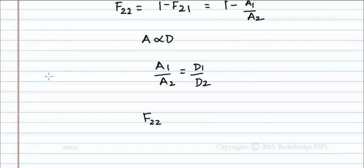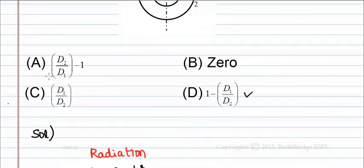So f22 equals 1 minus d1 by d2. So the correct option is option d: 1 minus d1 by d2.